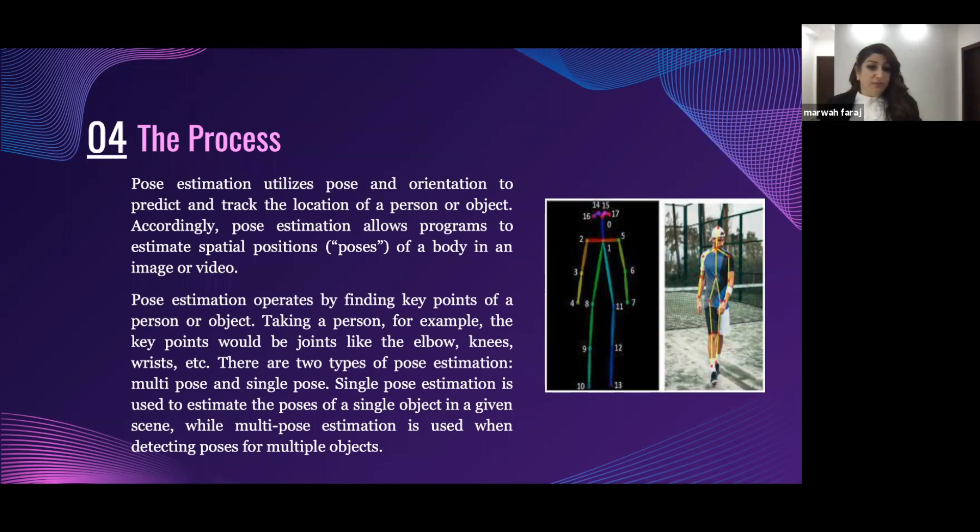There are two types of pose estimation: multi-pose and single pose. Single pose estimation is used to estimate the poses of a single object in a given scene, while multi-pose estimation is used when detecting poses of multiple objects.